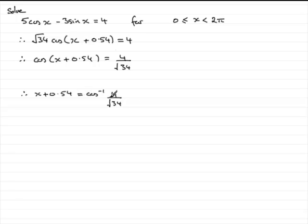Now at this point you need to work out the inverse cos of 4 root 34, get an answer and then use the quadrant diagram. You can use a graphical method but the quadrant diagram I find is a lot quicker and easier. And if you're unfamiliar with the quadrant diagram just go on my website, look under quadrant diagrams for trigonometry and there's lots of tutorials on it.